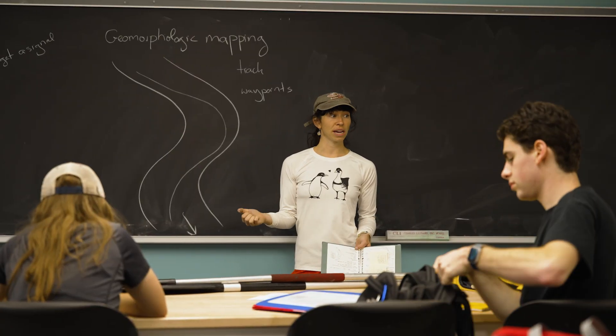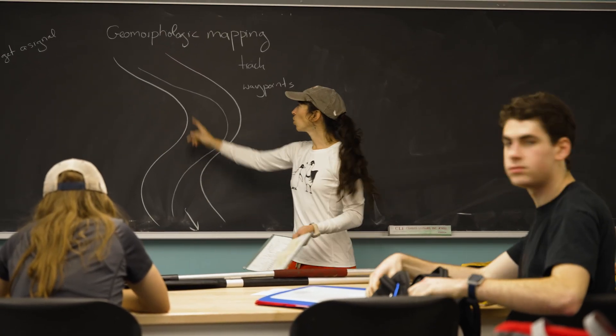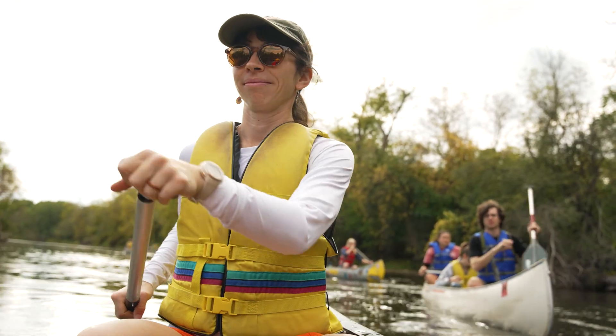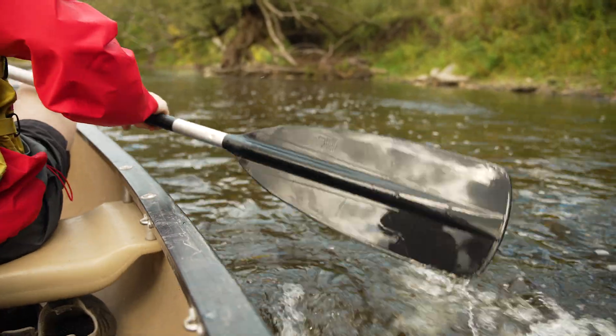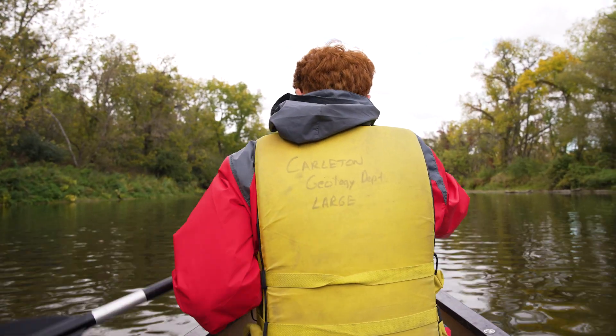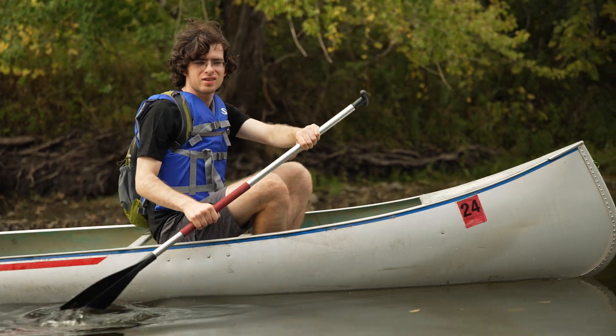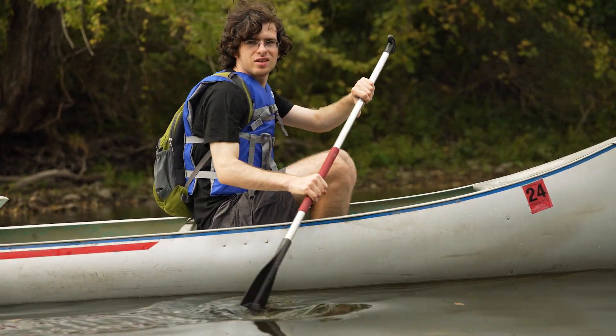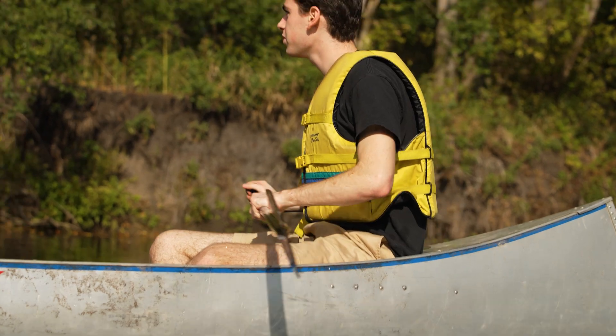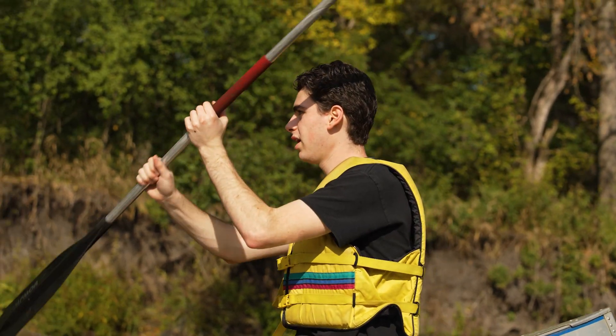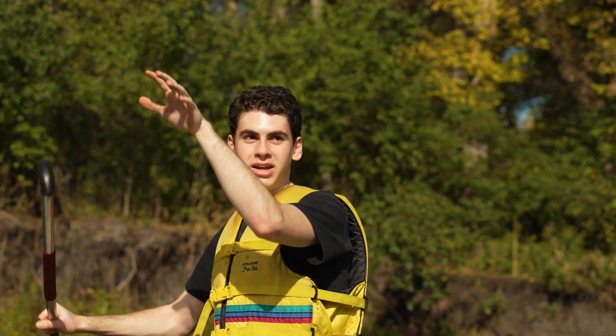The third week lab is mapping the stream channel features of the Cannon River — the purpose is learning how to make a channel morphology map. We do it by canoe because it's much more valuable as a learning experience to be on the river, moving with the water at the speed of the water. If you keep getting stuck on gravel bars, you eventually learn that gravel bars tend to happen in this part of the stream channel. It takes abstract concepts from the classroom and makes them really concrete.